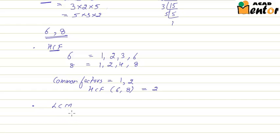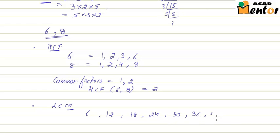For calculating LCM, we have to find the multiples of 6 and 8, and amongst those multiples find the least number. So let's list multiples of 6: 6, 12, 18, 24, and so on. Multiples of 8 would be 8, 16, 24, 32, 40, and so on.